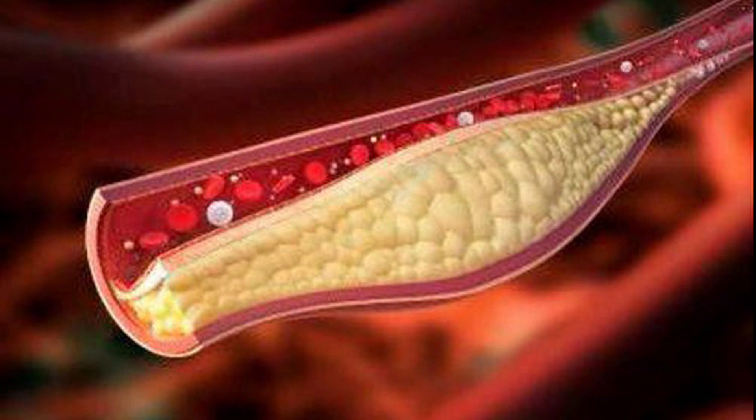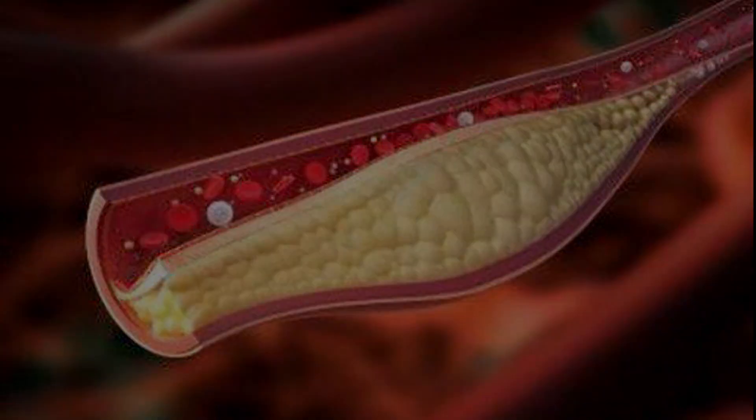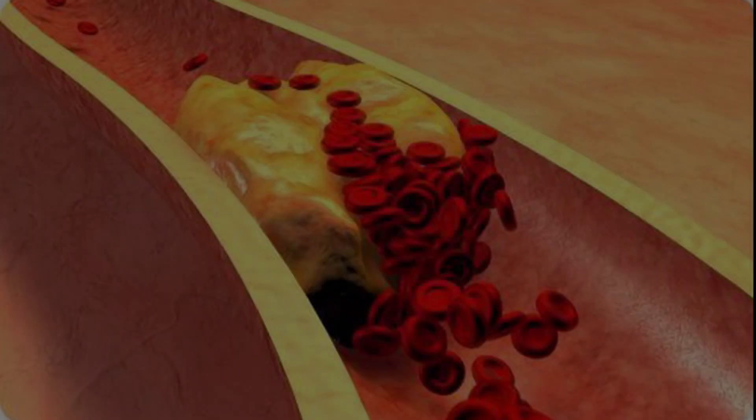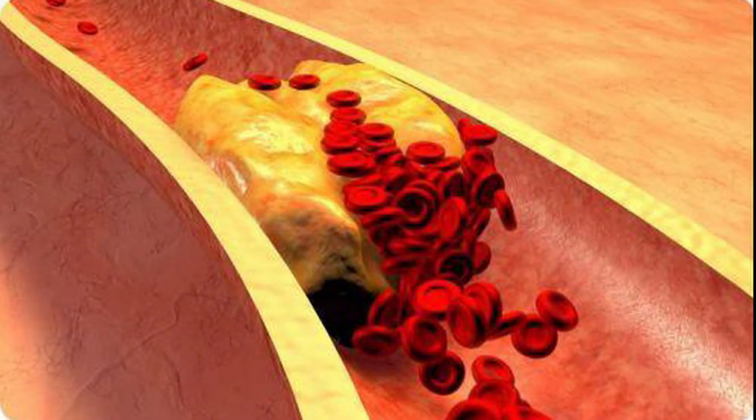If the plaque breaks apart, it can lead to blood clots. Strokes occur when a clot blocks any of the arteries that lead to the brain. If an artery leading to your heart is blocked, you can have a heart attack.